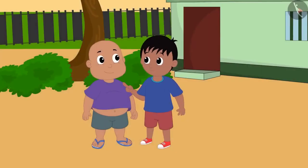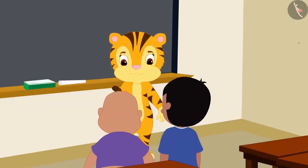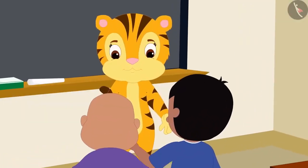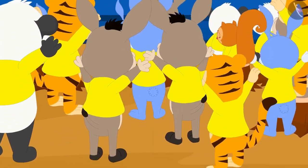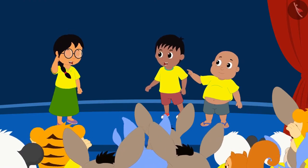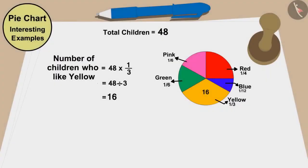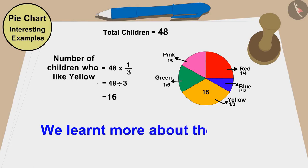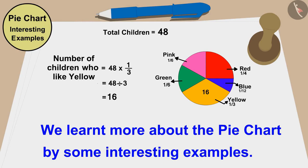Bablu, let's quickly tell Mrs. Khan that most of the children like yellow color. Raju and Bablu conveyed this to Mrs. Khan, and then all the children celebrated the annual festival with great enthusiasm by wearing yellow shirts. Children, in this video we learned more about the pie chart through some interesting examples. In the next video, we will see some common mistakes related to this.